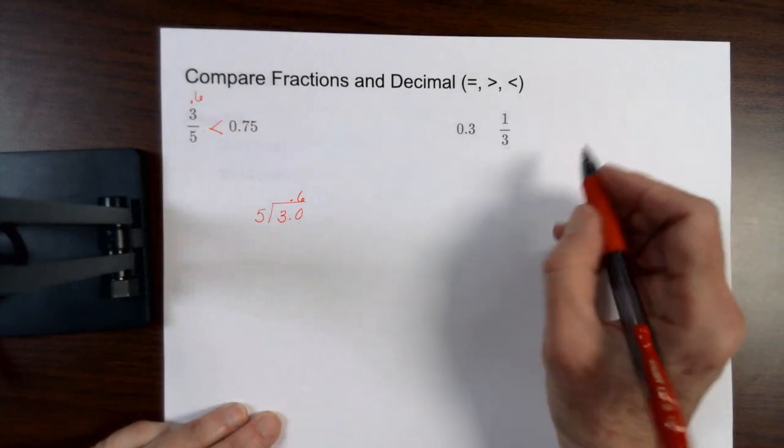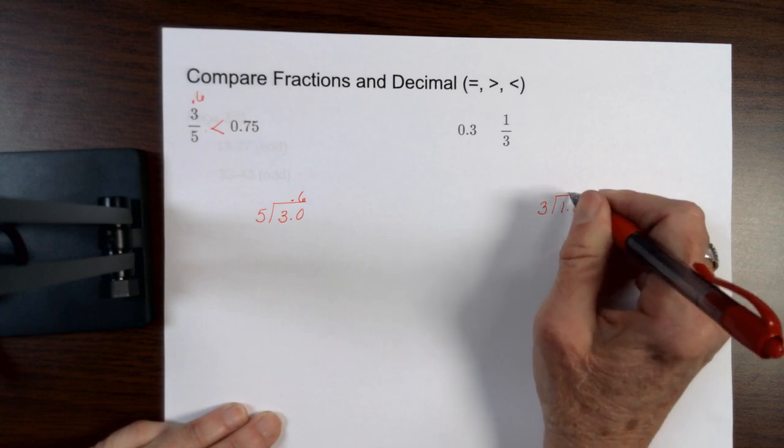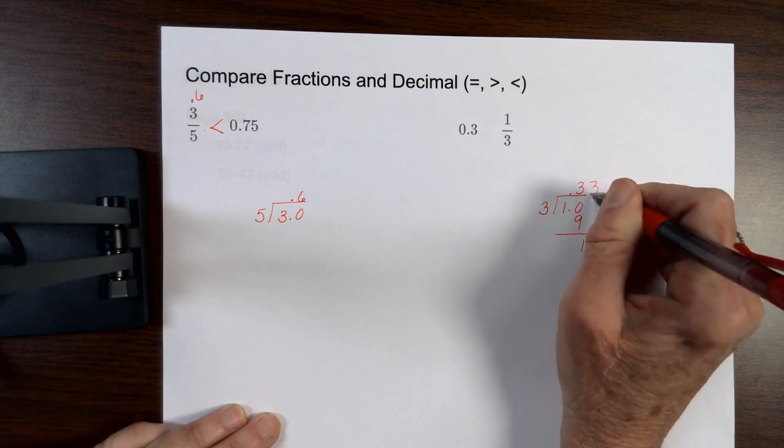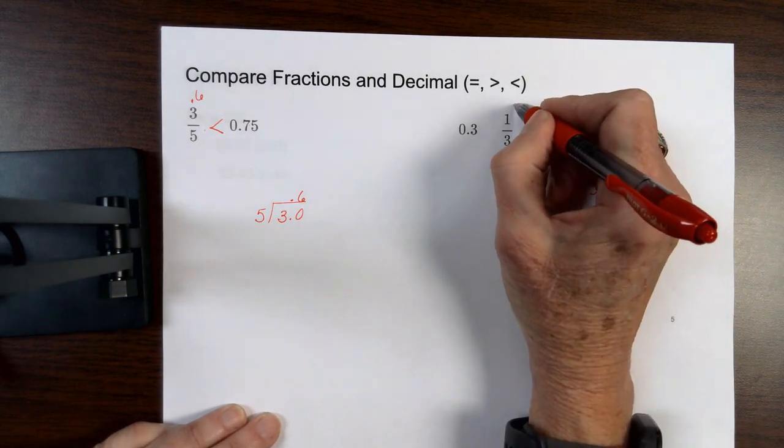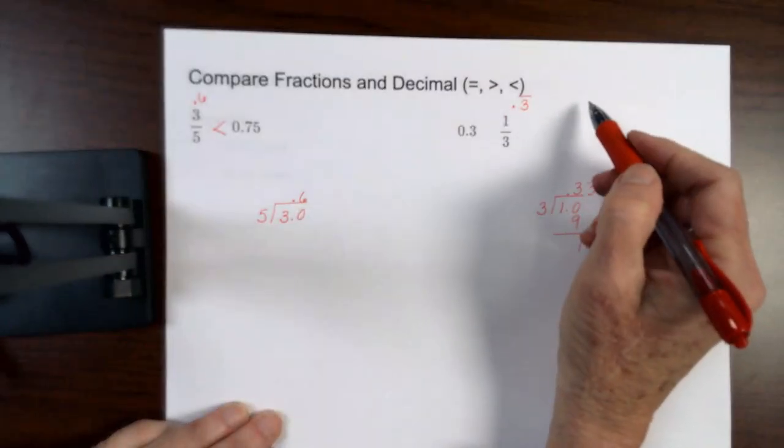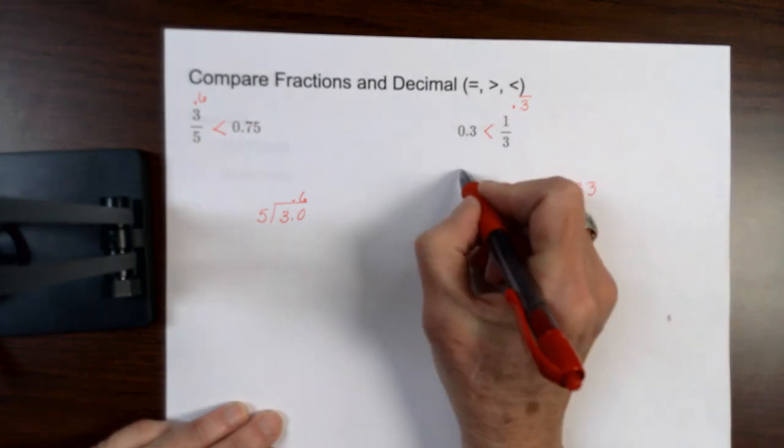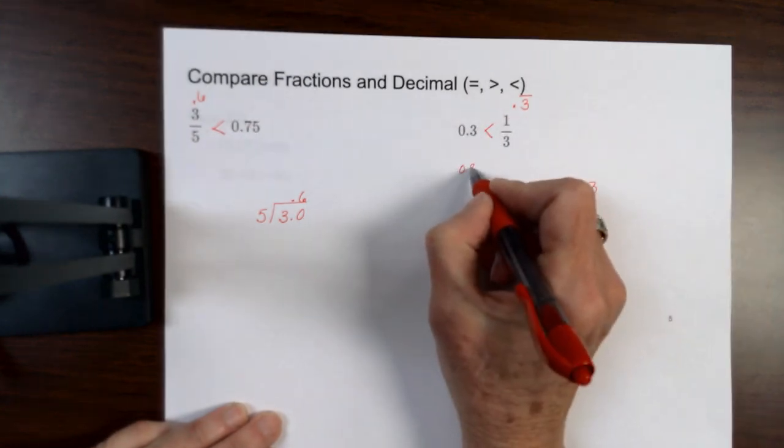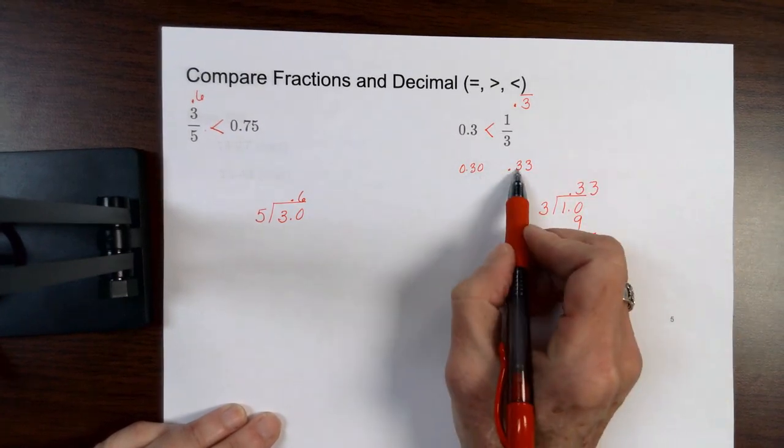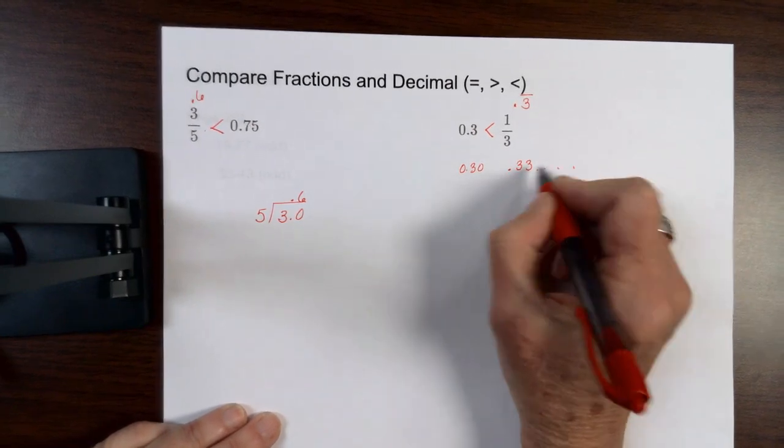On this one, if I make a decimal value out of the one-third, you're going to get a repeating decimal. So this right here is equal to 0.3 with a line over it. Well, 0.33333 is going to be greater than 0.3 because this side would just be 0.30. This side would be 0.333. So they're the same in the tenths. So I move on to the hundreds and this one is bigger.